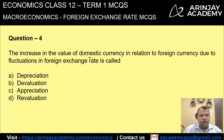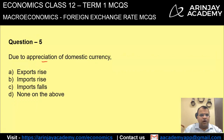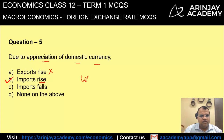The increase in the value of domestic currency in relation to foreign currency due to fluctuation in foreign exchange rate is called appreciation — the decrease was called depreciation. Due to appreciation of domestic currency, what is going to happen? Export will rise? No, that happens with depreciation. Import will rise? Yes, this is the right answer — because now for fewer rupees you can buy more foreign commodities, and therefore you will buy more from various countries, so imports will rise.